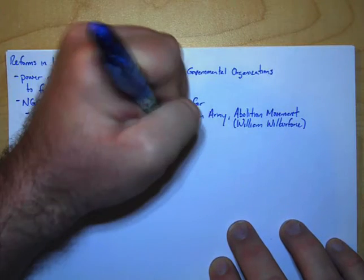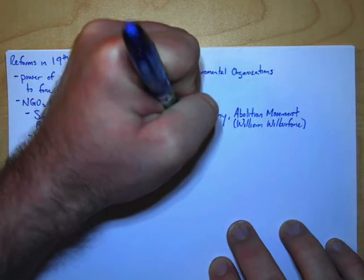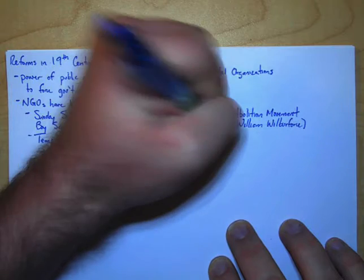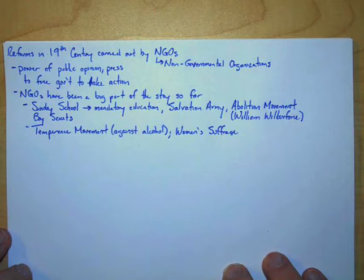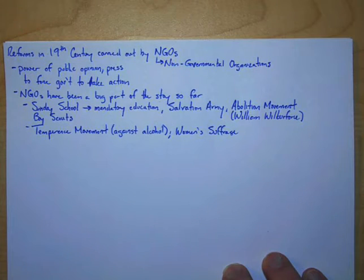We could think about the Temperance Movement against alcohol. A lot of the women's suffrage movement were all done by non-governmental organizations, especially if we're thinking about women doing this. Women weren't in the government.